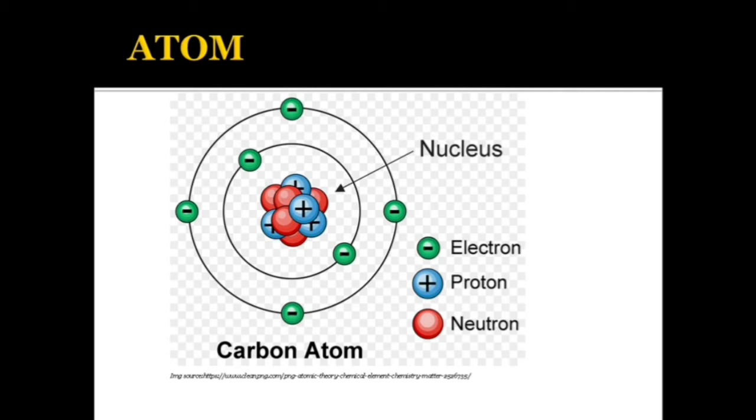In the extra nucleus part, which is the outer part of the atom, the electrons are revolving in the shells. Electrons are negatively charged.